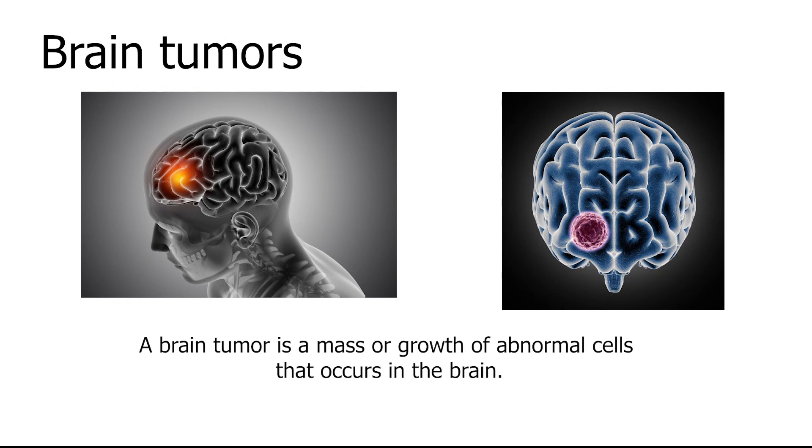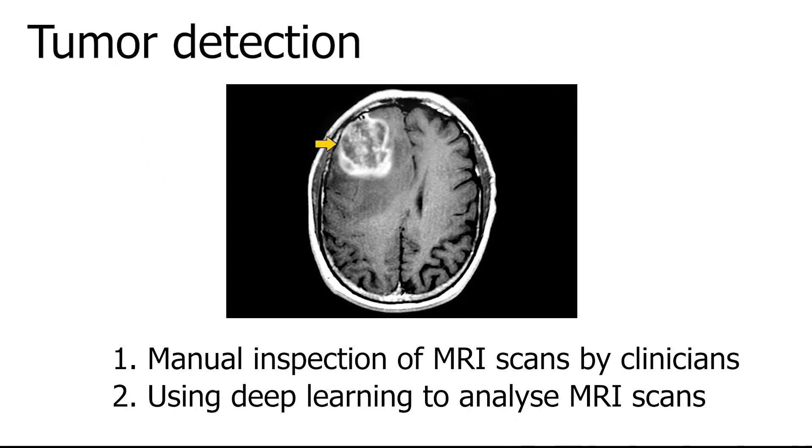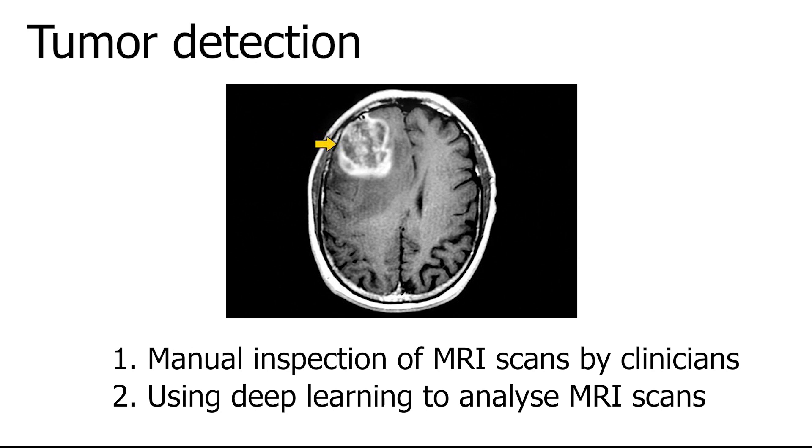There are about 250,000 deaths due to brain tumors globally. Tumor detection: usually brain tumors are diagnosed using MRI scans. Analysis of those is done by two means: one, manual inspection of MRI scans by clinicians; two, using deep learning to analyze MRI scans.